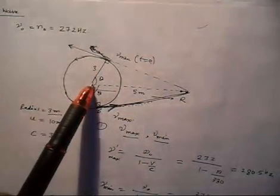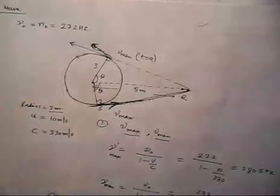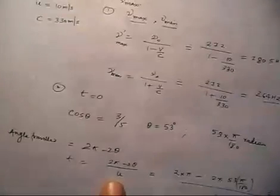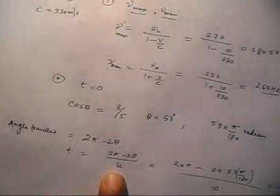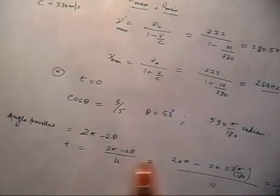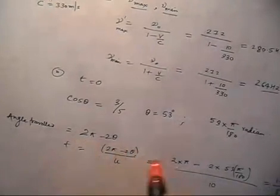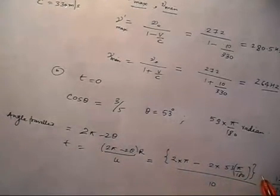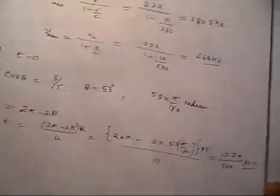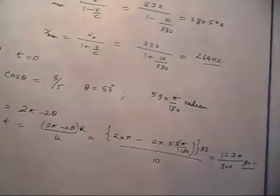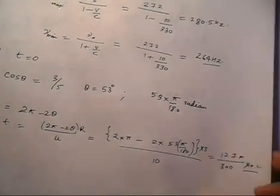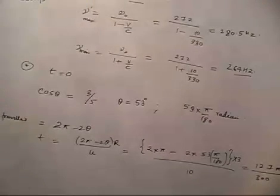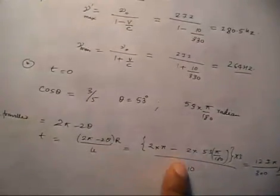An important correction: when computing the time, the angle travelled must be multiplied by the radius R equal to 3 meter to get the arc length, and then divided by the speed U equal to 10 meter per second. So the formula is time equals (2 pi minus 2 theta) times R divided by U. I am leaving this final calculation for you to verify the answer of 127 pi over 300 seconds.